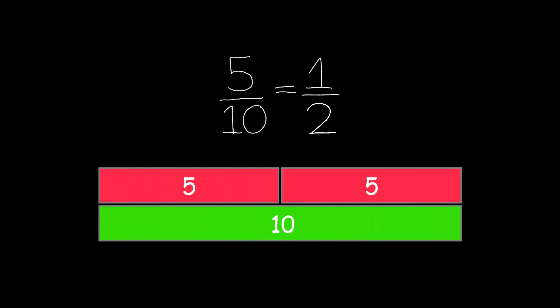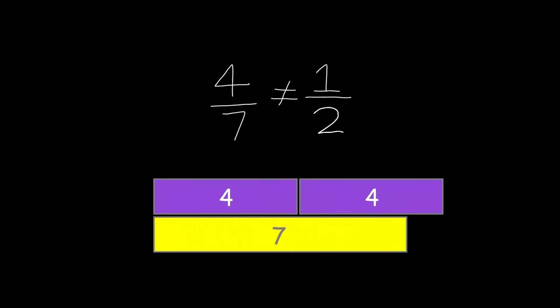It also happens when we work with fractions. The reason that five-tenths is equal to one-half is because there are two of those fives in a ten. And the reason that four-sevenths is not a half is because there are not two of those fours in seven. So it's all about unitizing.